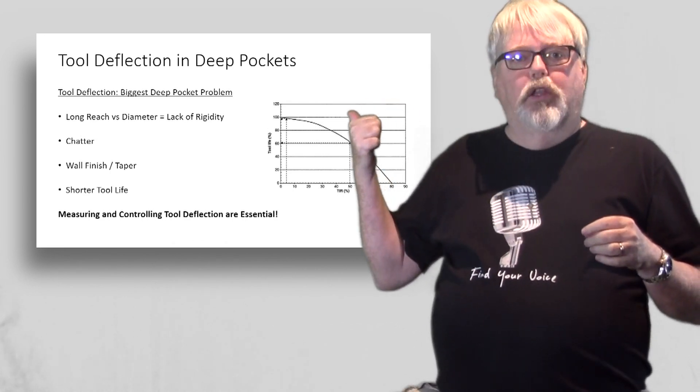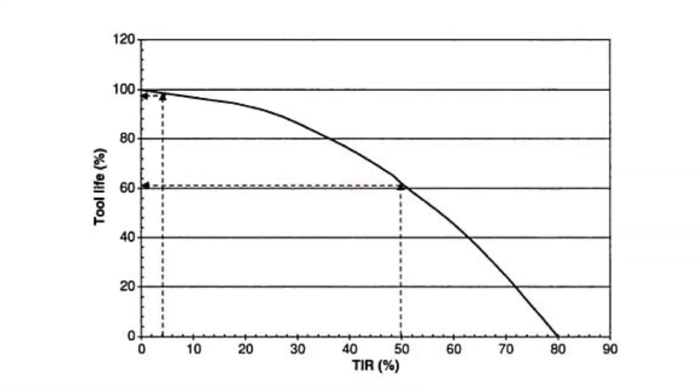In fact, we can see the tool life graphically in this chart. It plots deflection as a percentage of chip load versus tool life. For example, if the deflection is half the chip load, follow the dotted line and we see tool life has been reduced to just 60% of what it should have been.